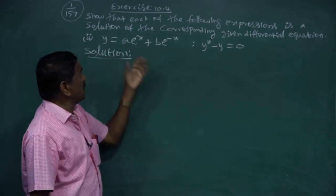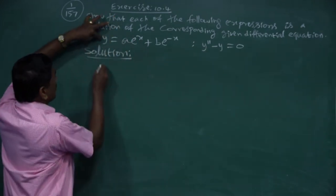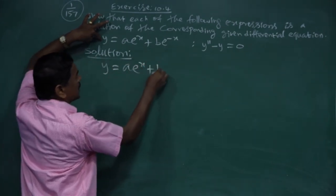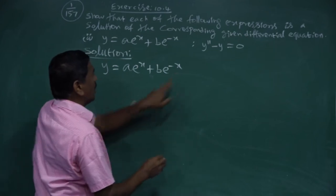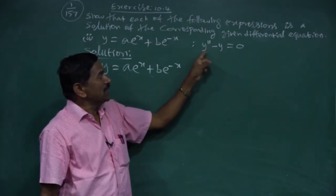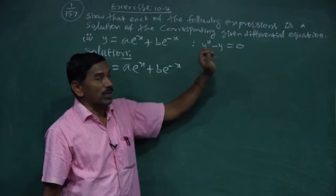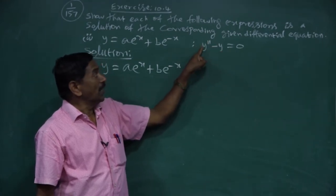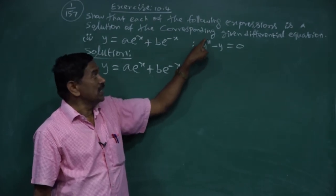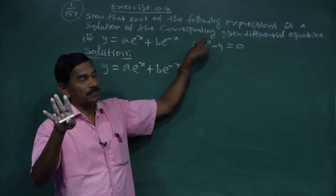Now, first topic sub-question 2. The problem: show that y = a·e^x + b·e^(-x) is a solution of the differential equation y'' - y = 0. Take the given curve: y = a·e^x + b·e^(-x).